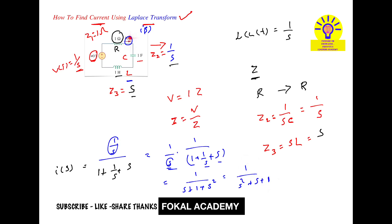But we want current I of T, so apply inverse Laplace transform. It can be written as S plus 1/2 whole squared plus root 3 by 2 whole squared.